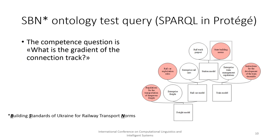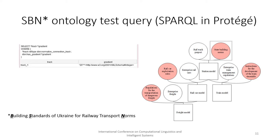The function of the building standards of Ukraine for railway transport norms module is conceptualization and formalization of the building standards norms regulations for further input into the modular ontology of the station model. The competency question is: what is the gradient of the connection track? The restriction from the building standards norms is that it is allowed to use gradients of up to 40 per mille on the track of 7th station. With this SPARQL query, one can find out what gradients are on which connection track.